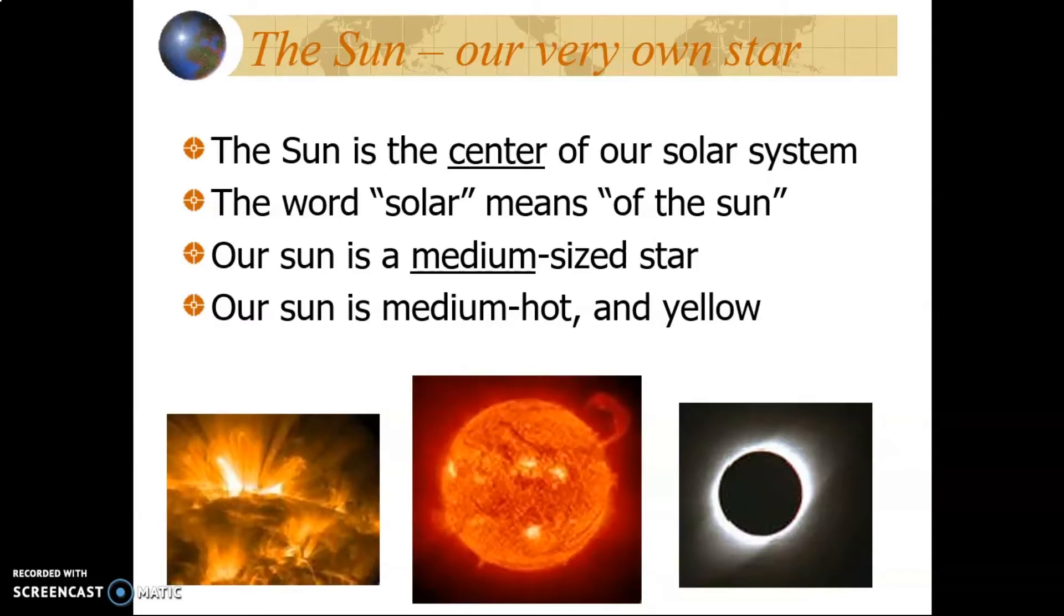Even though the Sun is pretty important to us, it is not the only Sun in our universe, and is not the largest. Our Sun is medium-sized and yellow. This might seem obvious to us, but the color of the Sun tells us a lot about how old the Sun is and how hot it is. Let us move on to the planets themselves.